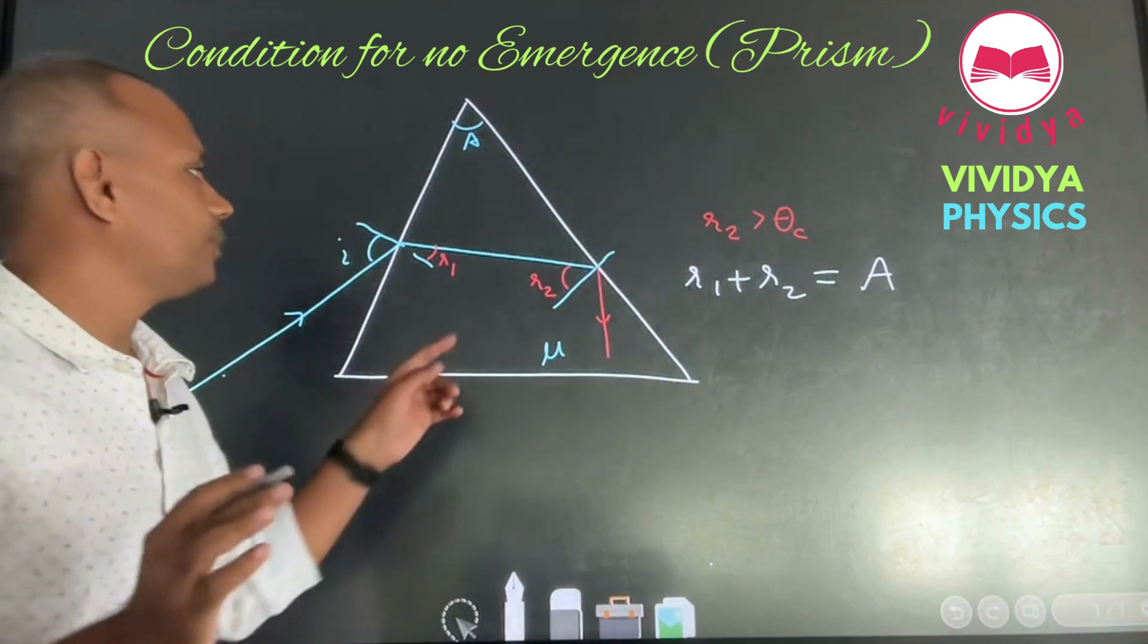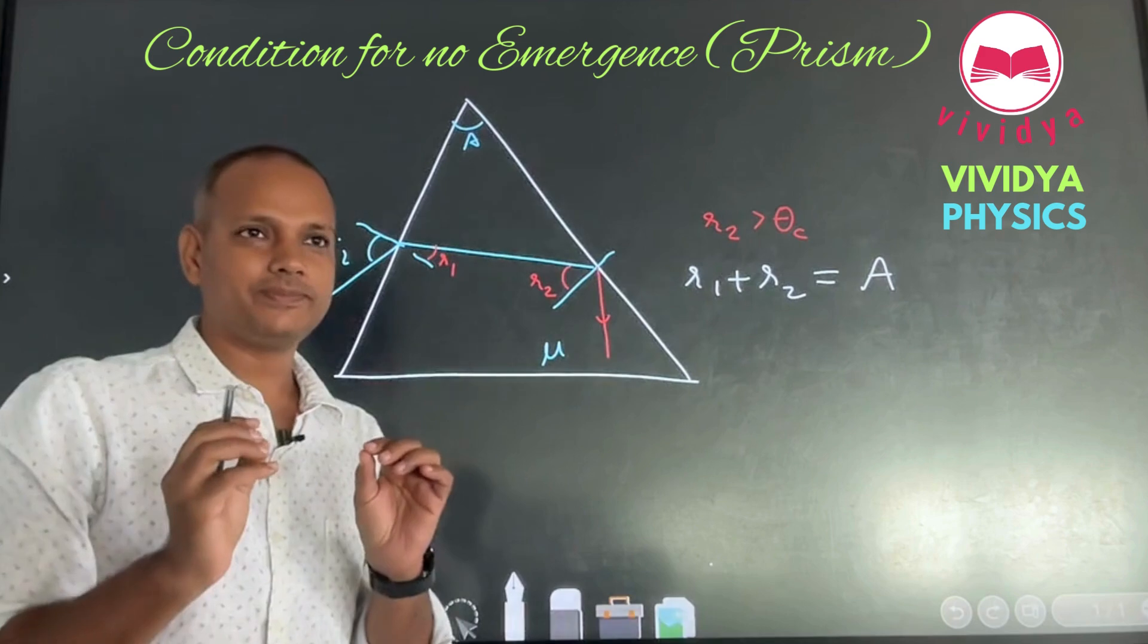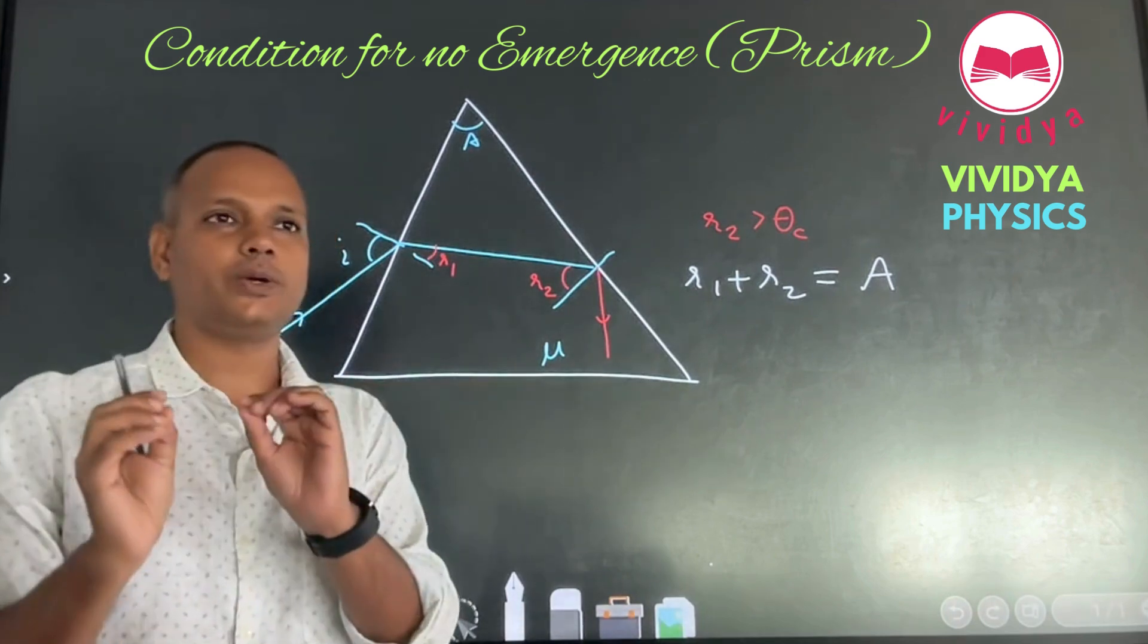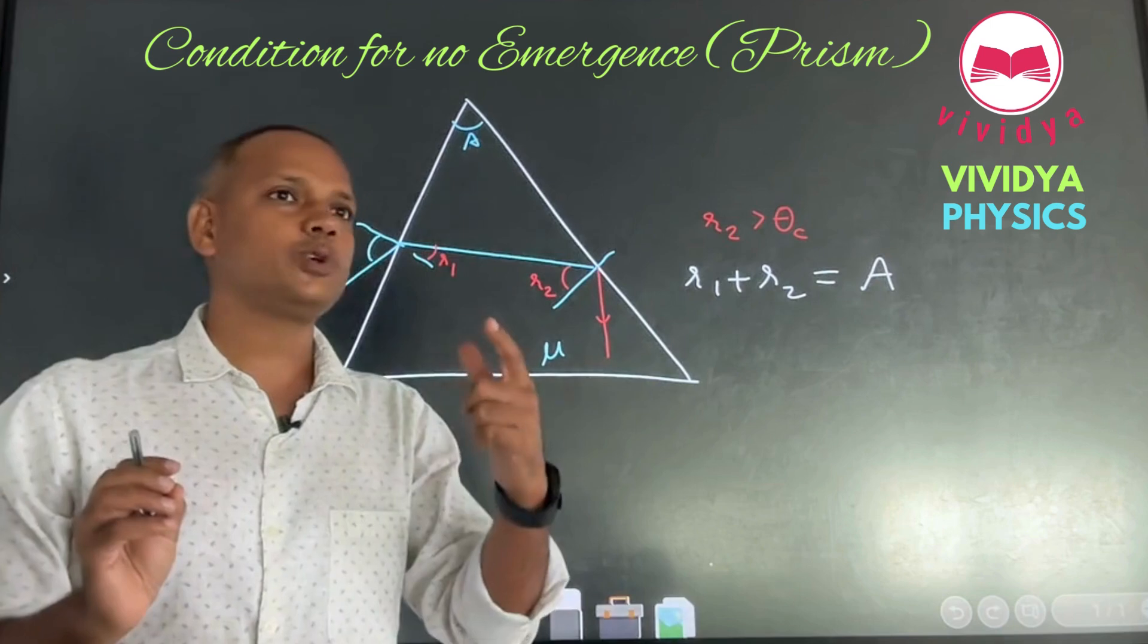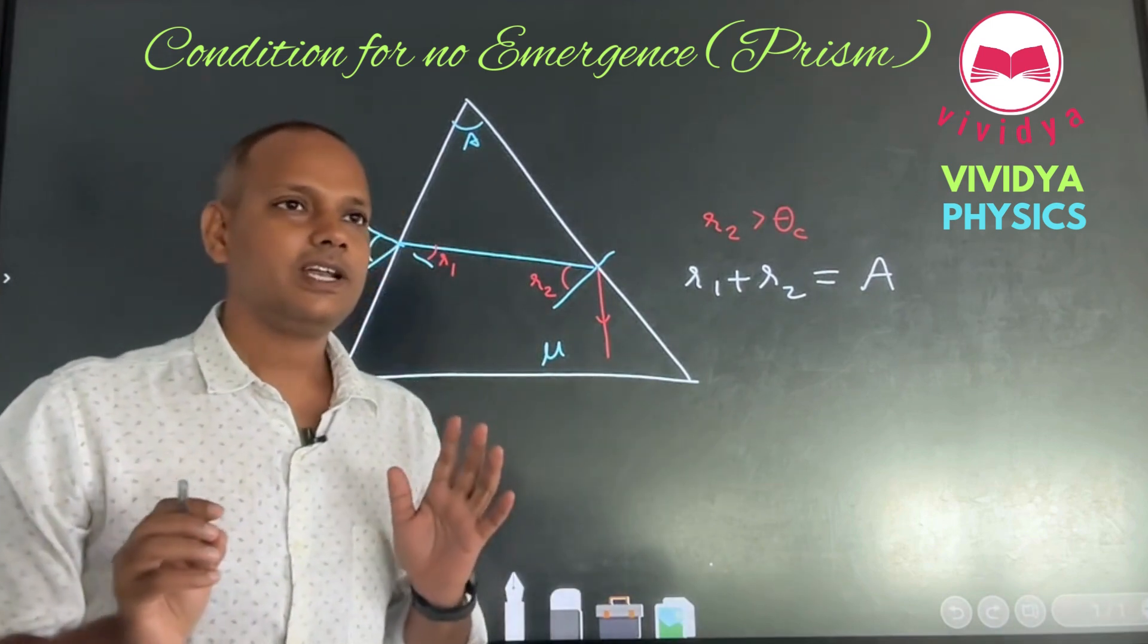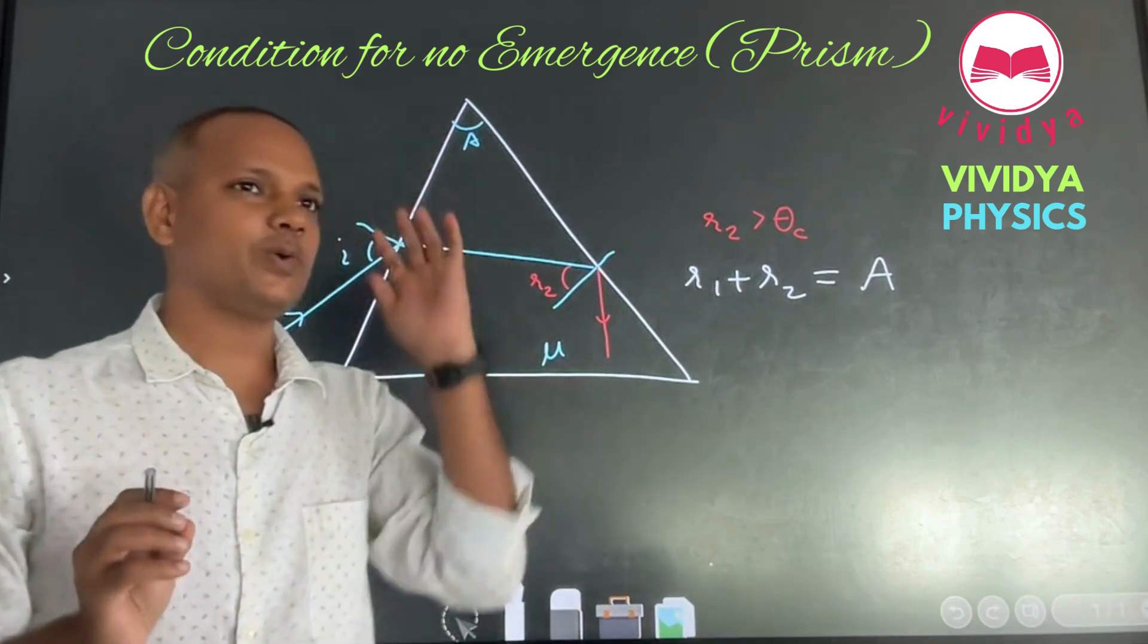Somehow suppose you find the smallest value of R2. Now suppose the smallest value of R2, then even that smallest value should be greater than critical angle, right? Now let us explore what will be the smallest value of R2.